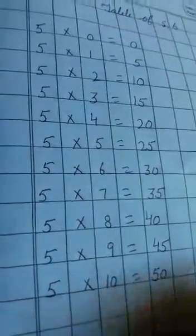5×10's are 50. Now we will start table of 6. 6×0 is 0.